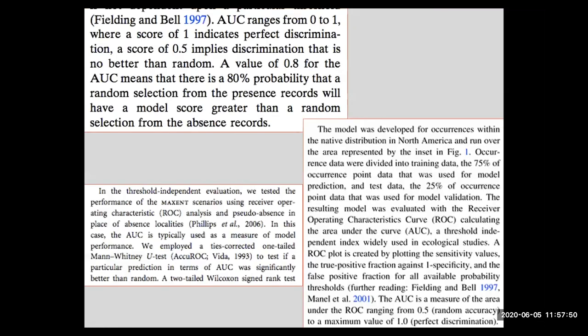Now, there are a bunch of versions of this. You can have a very probabilistic description. A value of 0.8 for AUC means that there's an 80% probability that a random selection from the presence records will have a model score greater than a random selection from the absence records. Well, a lot of the ROC applications that you will see are much simpler than this. There's somewhere out there in the internet, there's a scale of 0.6 or better is good, and 0.7 or better is really good, and 0.8 or better is really, really good, and 0.9 or better is incredibly good.